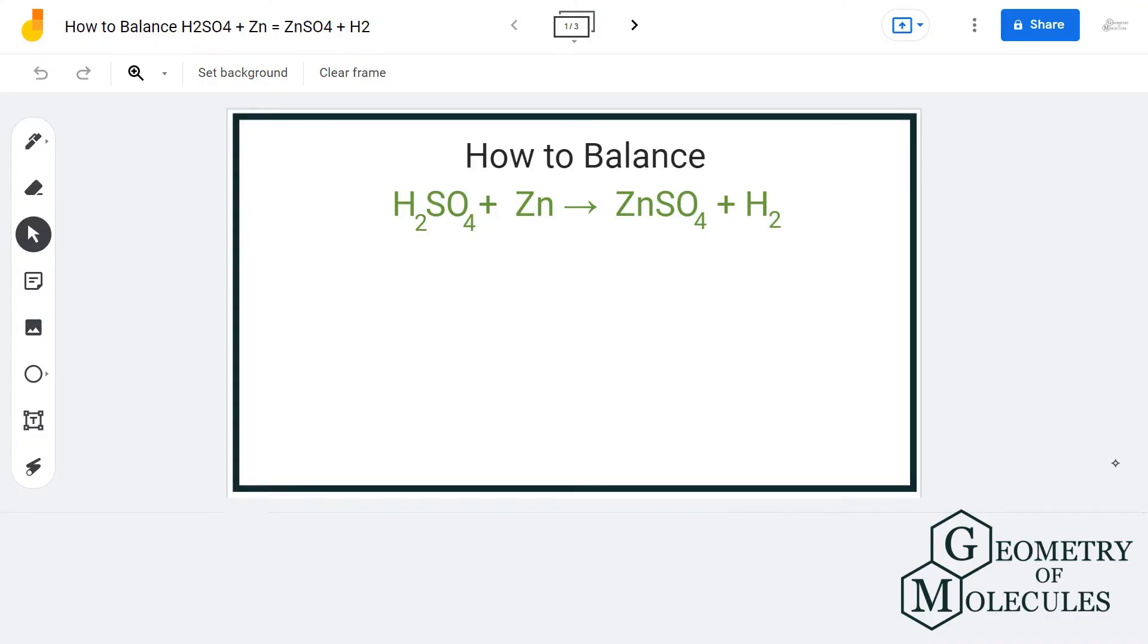Hi guys, welcome back to our channel. In today's video we are going to balance this equation: H2SO4 and zinc on the reactant side, and ZnSO4 and hydrogen gas on the product side. To balance this equation, we are first going to count the number of atoms on both the reactant and product side.